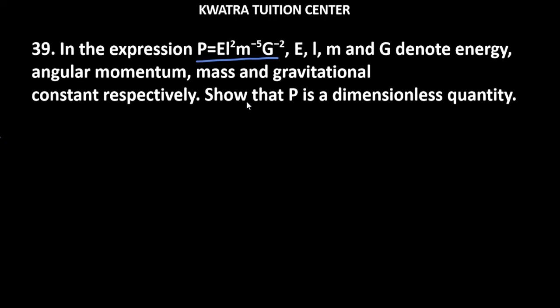E is energy, L is angular momentum, M is mass, and G is the gravitational constant. We have to show that P on the left-hand side is a dimensionless quantity. This means M⁰L⁰T⁰.